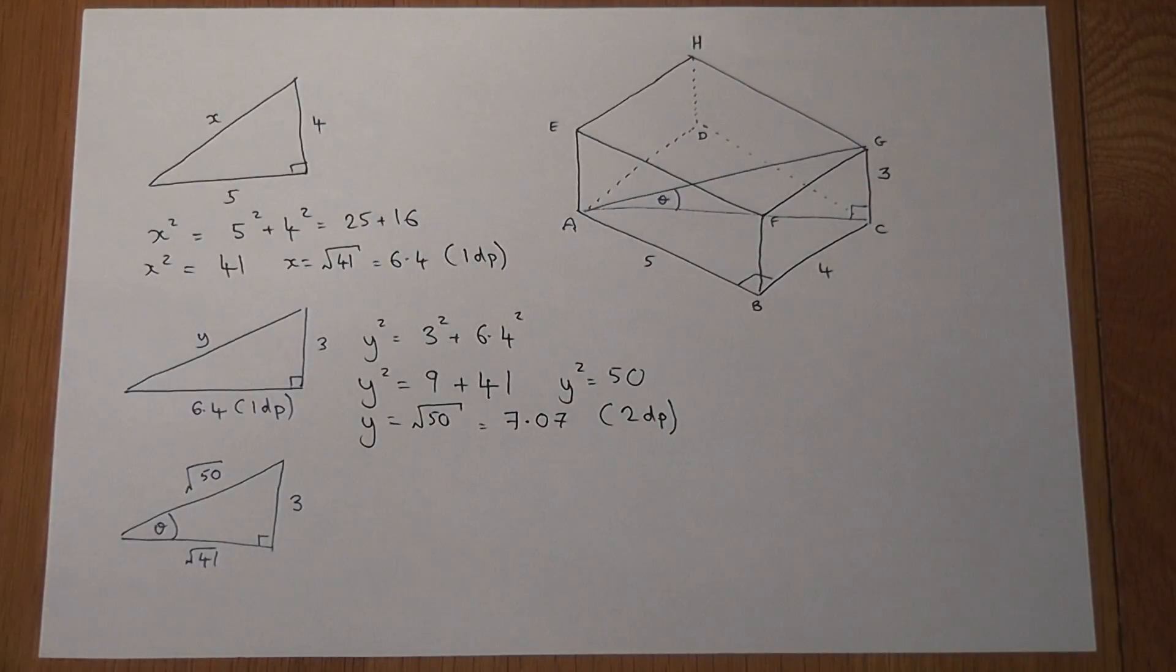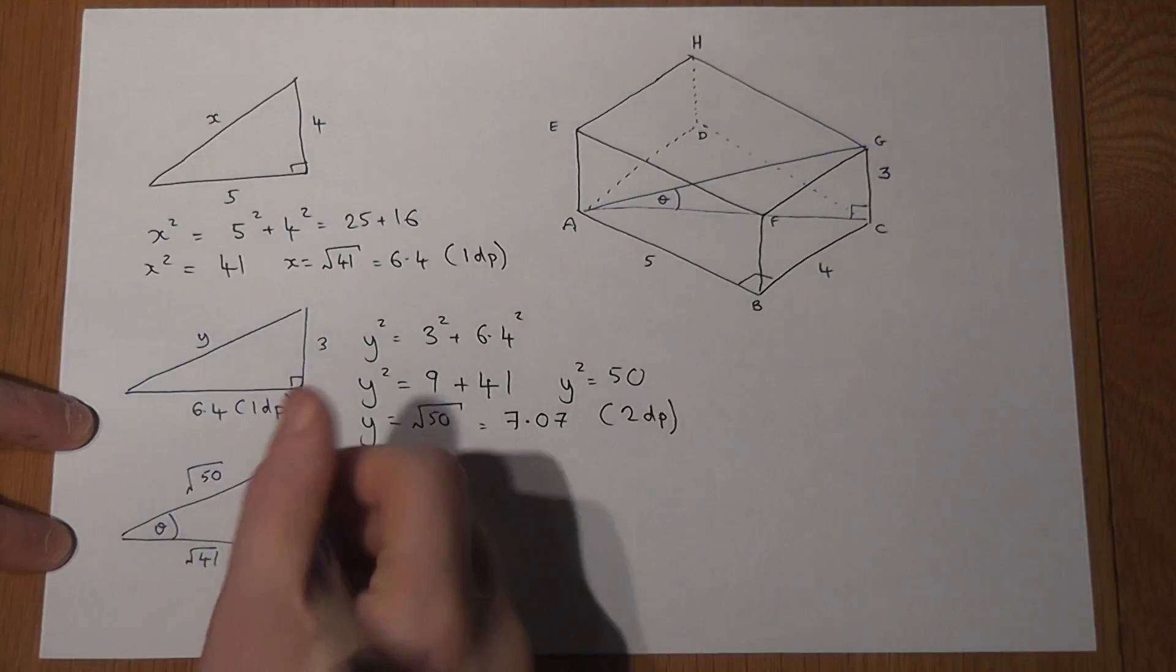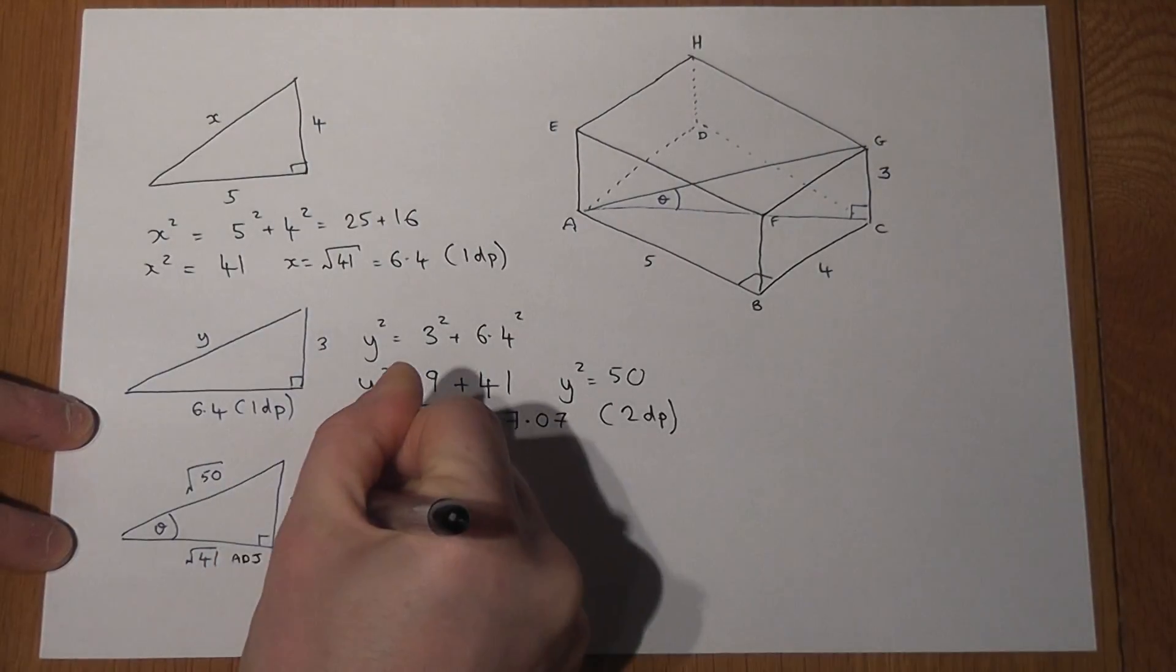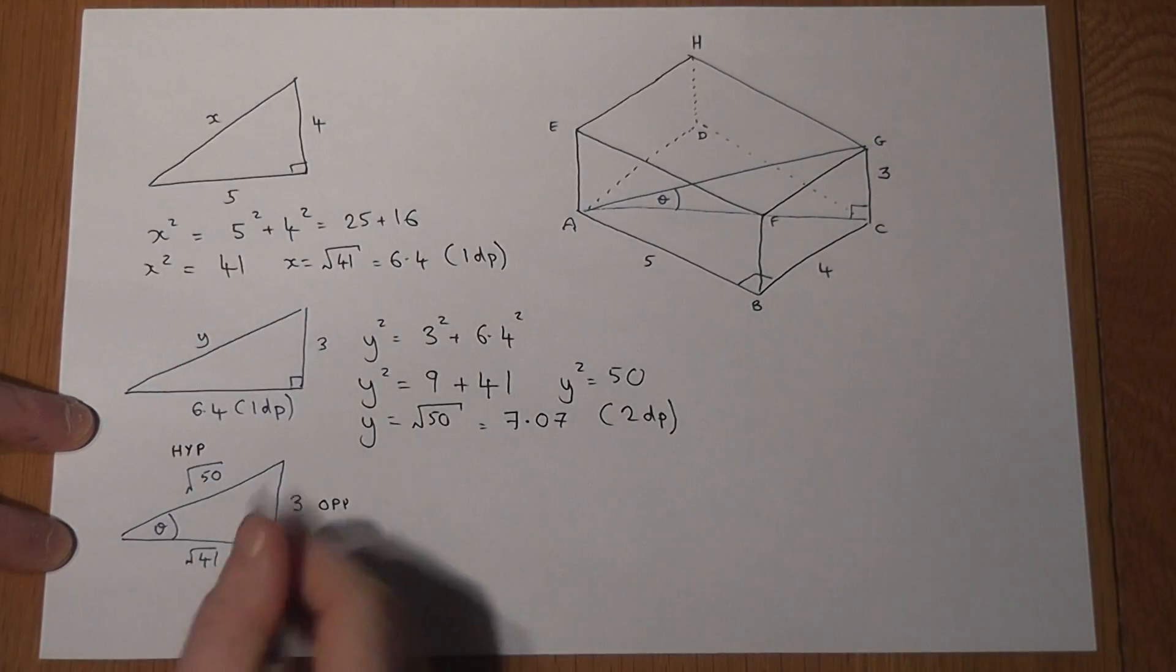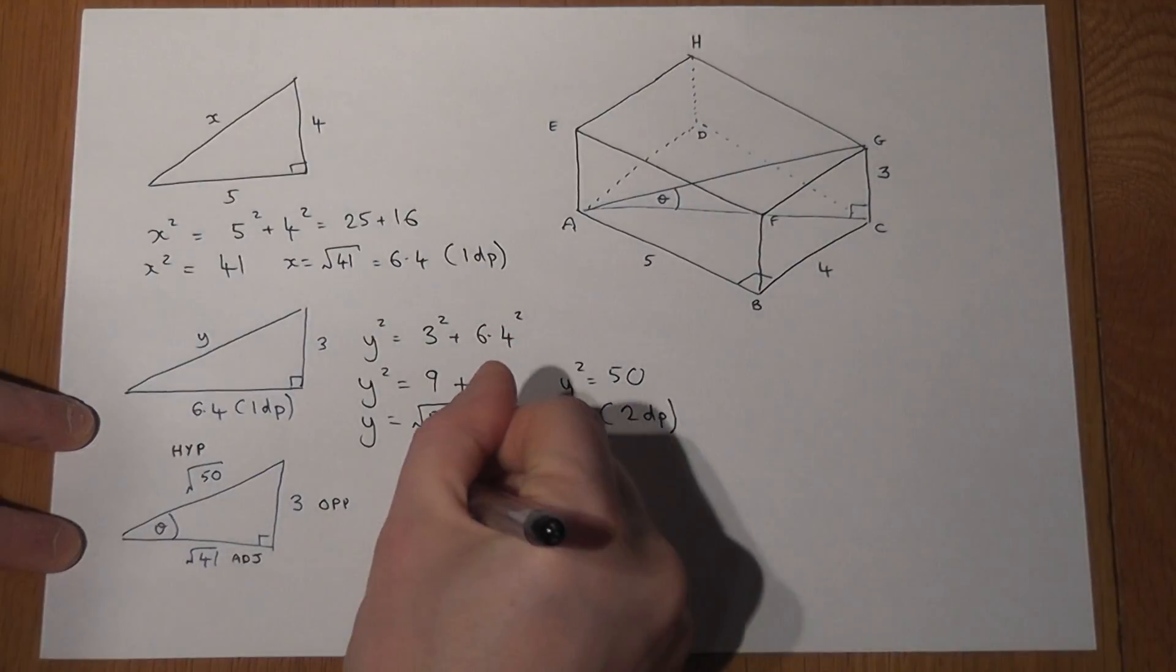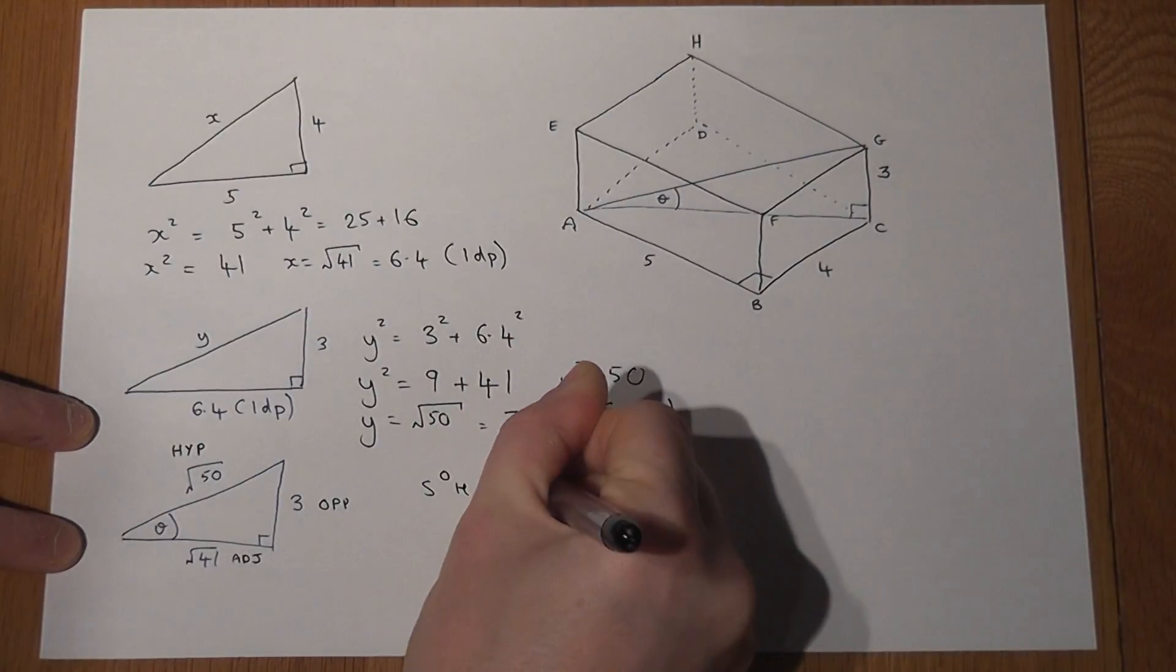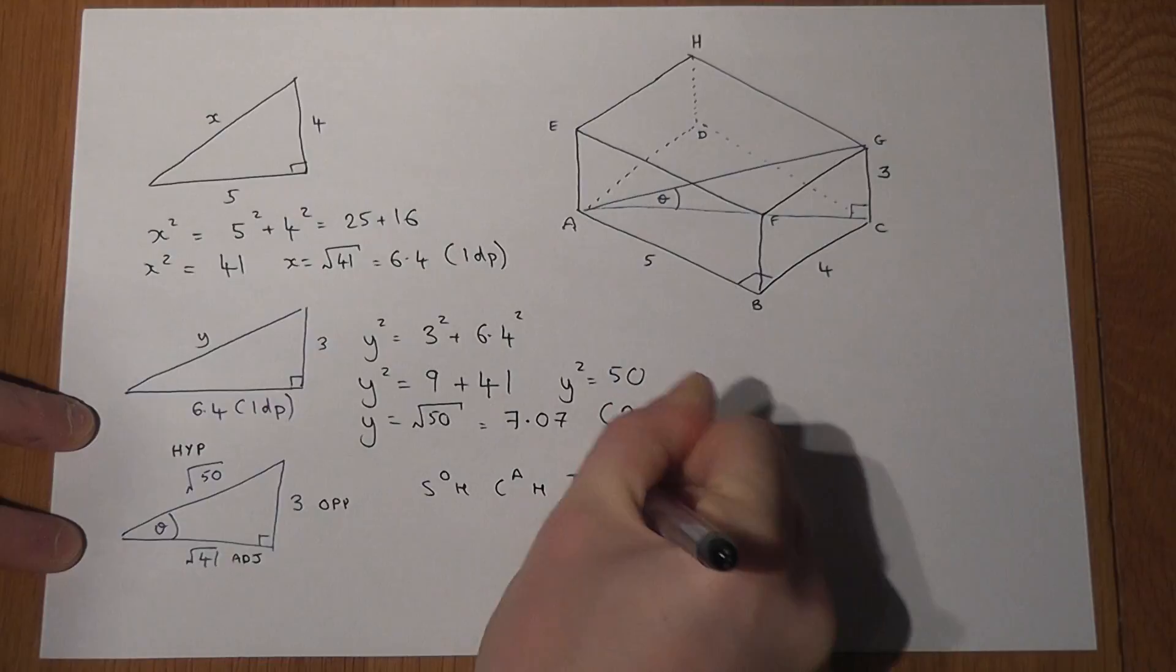Now to find the angle theta, I've got three different options, all of which use SOHCAHTOA. Now here's the angle, I know the adjacent, I know the opposite, I also know the hypotenuse. And I can pick either two of these sides and use SOHCAHTOA to find the angle.